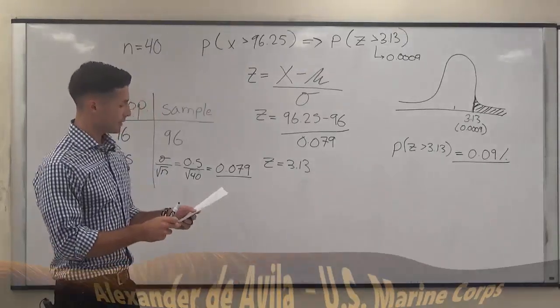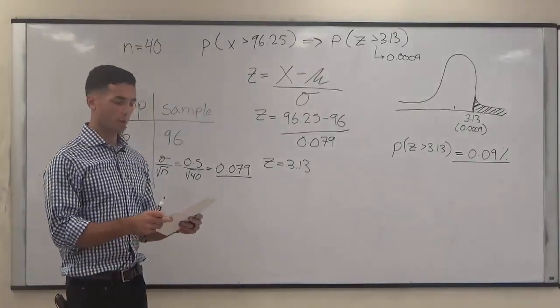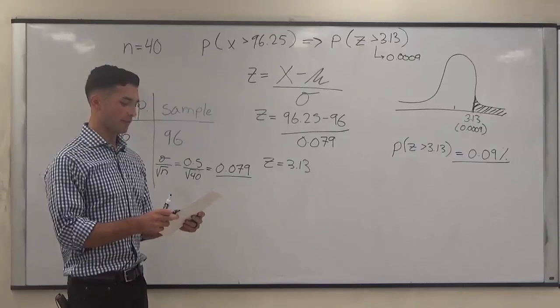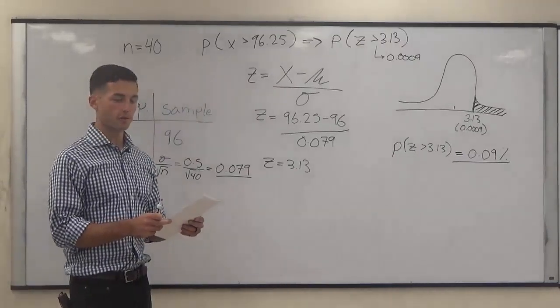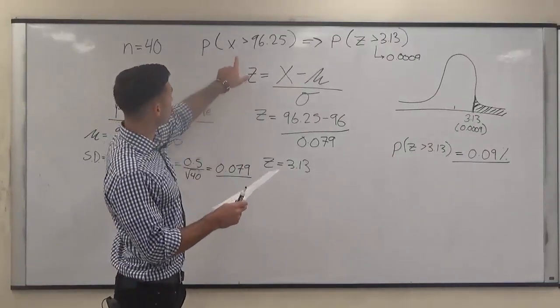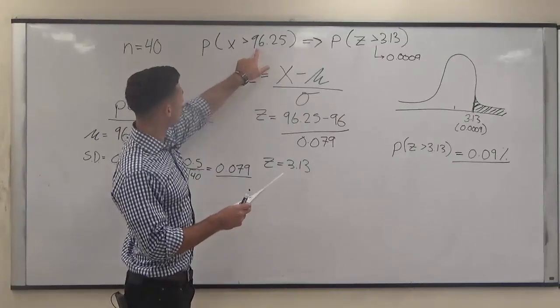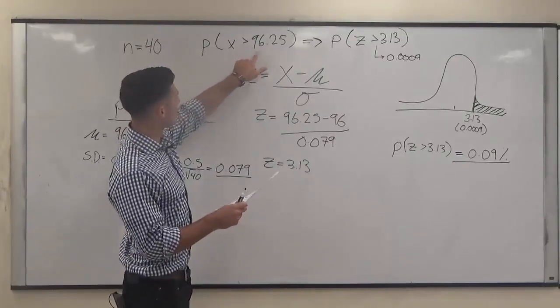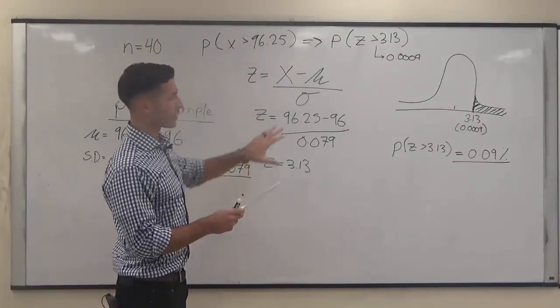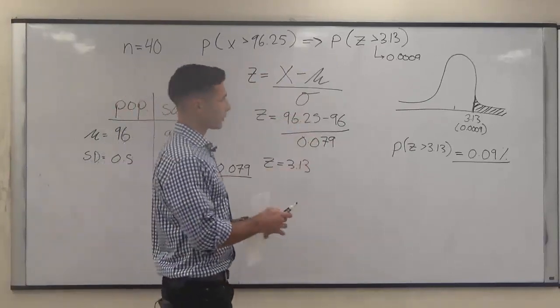we're asked to find the probability that the mean length of these boards is between 95.85 inches and 96.25 inches. We've already found one side of this, the probability that x is greater than 96.25 inches, so we're going to keep some of this information as we go forward.